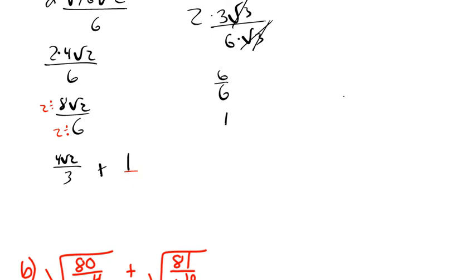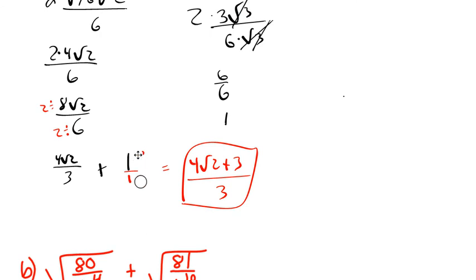I want both numbers to have the same denominator. This side already has a 3; the 1 technically has a denominator of 1. So if I want the 1 to become a 3, I multiply top and bottom by 3. Now both denominators are 3, and I can rewrite this as 4 radical 2 plus 3, all over the common denominator of 3. Both forms are equivalent — it's just that one is written as a single rational fraction.